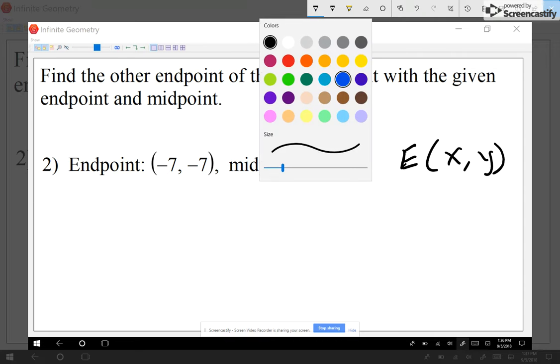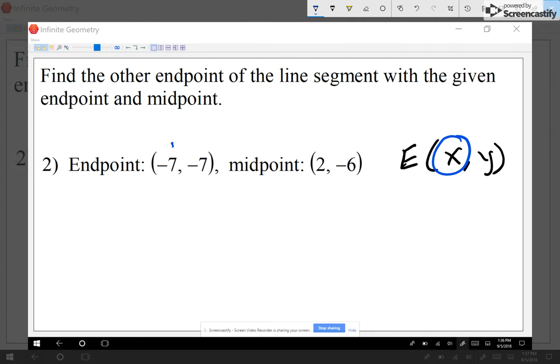I know that for the midpoint I add the x values of the endpoints. So that's why I wrote down the other endpoint, because I have to add the endpoints. So I'm just gonna go negative 7 plus x because I'm adding the x values. And I know usually I add them and divide it by 2 to come out with the midpoint.